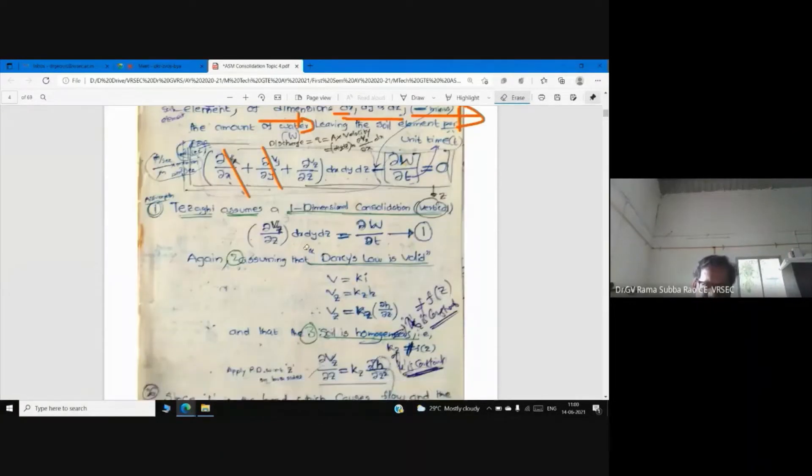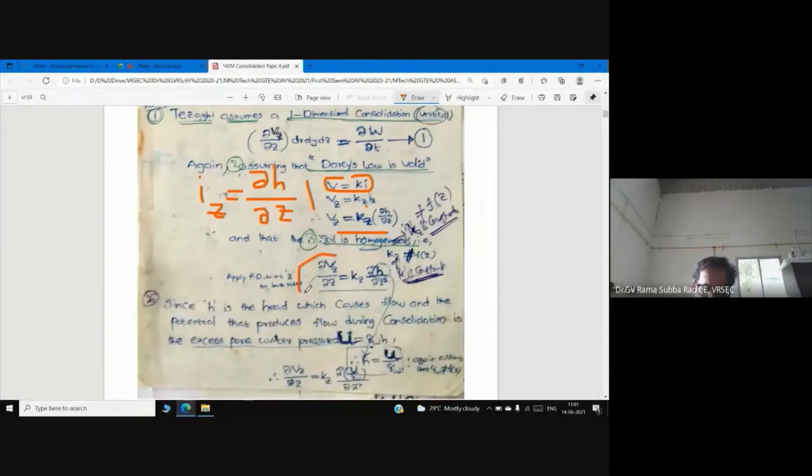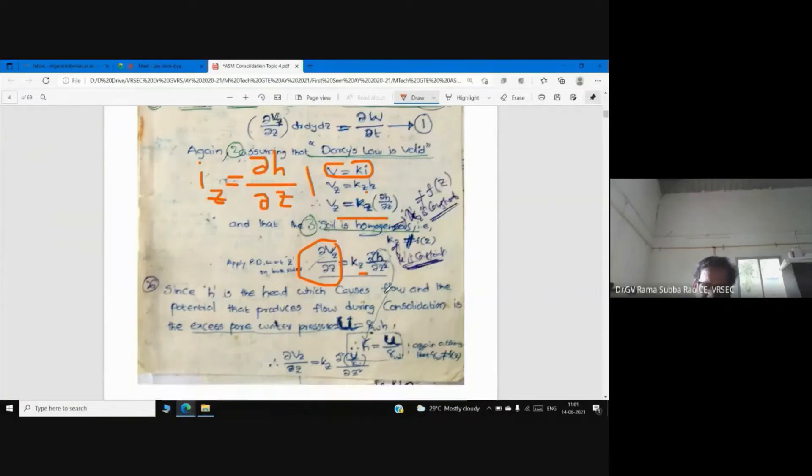Now you can see, what is Vz? Can anyone tell me? Vz is equal to kz, z means vertical direction. What is kz? It's k times iz. What is iz? Hydraulic gradient. ∂h by ∂z, difference in head by difference in thickness. Now you can see, ∂Vz/∂z equals kz times ∂h/∂z, so what is going to happen? kz times ∂²h/∂z².